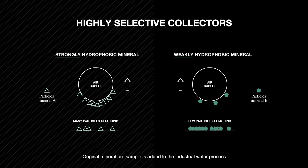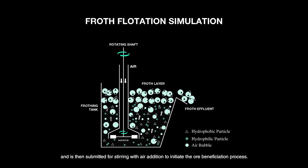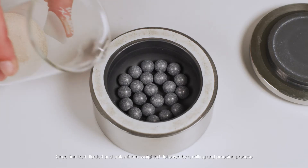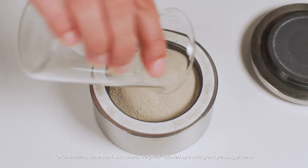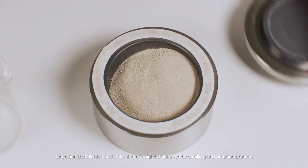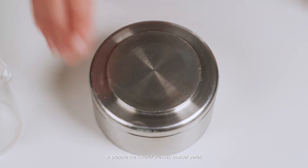The original mineral ore sample is added to the industrial water process for homogenization and conditioning, and is then submitted for stirring with air addition to initiate the ore beneficiation process. Once finalized, the floated mineral is weighed, followed by a milling and pressing process to prepare the mineral pressed powder pellet.